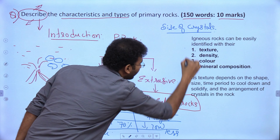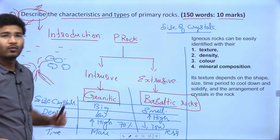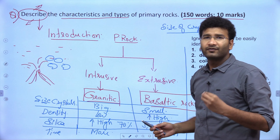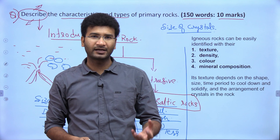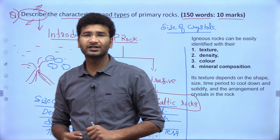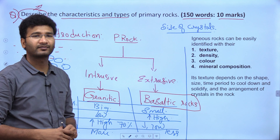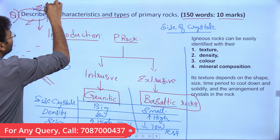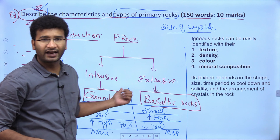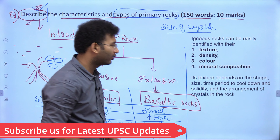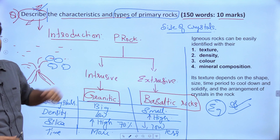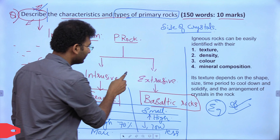In the introduction, define primary rocks, then discuss the nature of rocks giving examples of granite and basalt. Even in the NCERT, the types of basaltic and intrusive rocks are clearly mentioned. The types of primary rocks are intrusive (granite) and extrusive (basalt). Mention a few examples and their relevance. This is how the question on primary rocks should be approached.